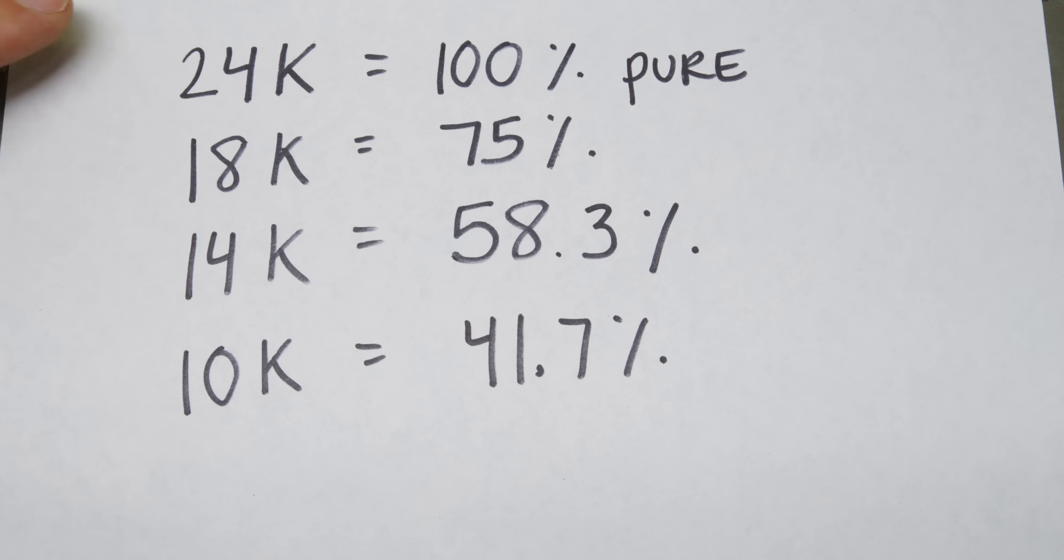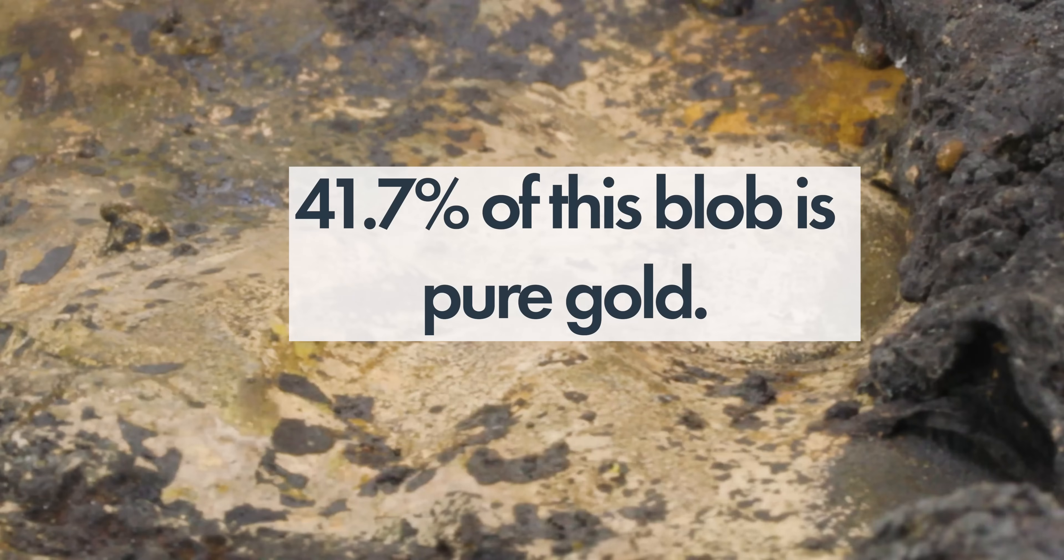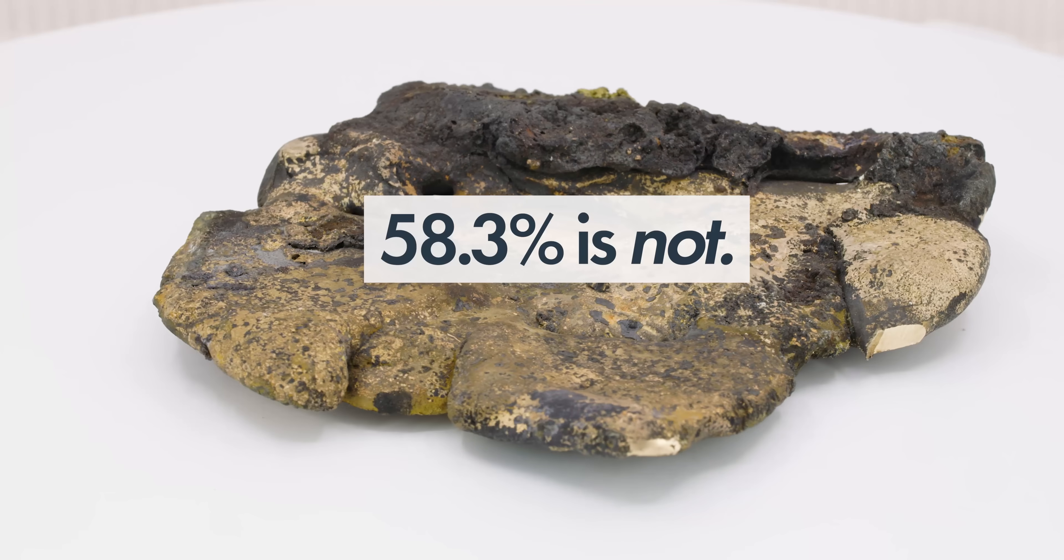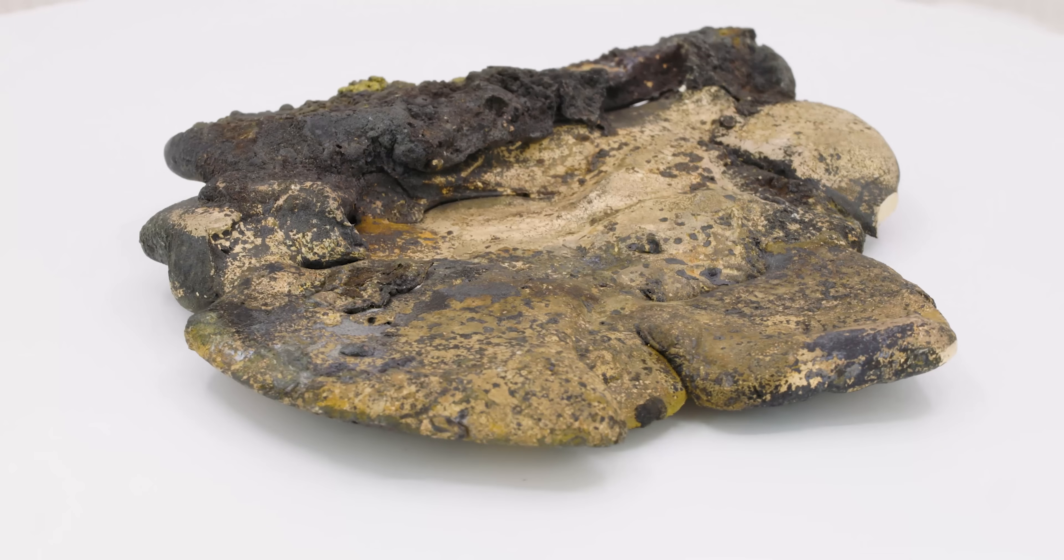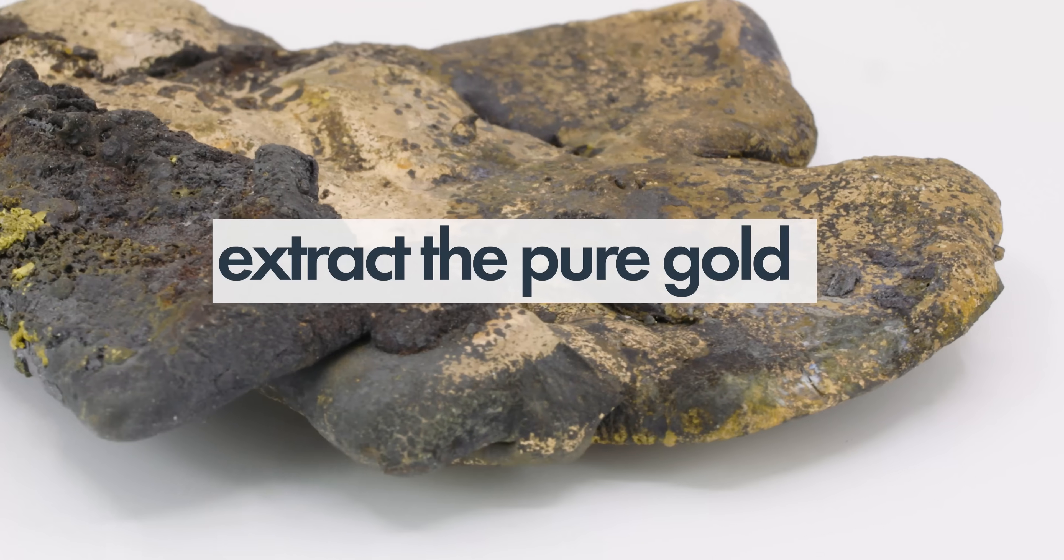10 carat gold is 41.7% pure. In other words, 41.7% of this blob is pure gold, which means 58.3% is not. It's other metals and who knows what else. The mission? Extract the pure gold using chemistry.